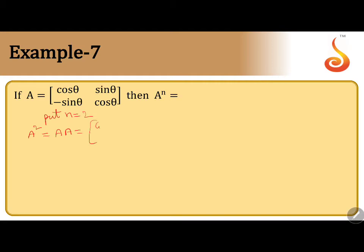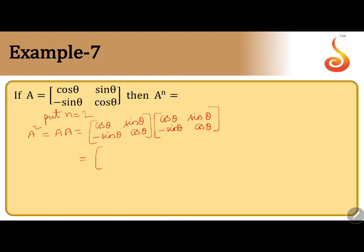So matrix A is already given as [cos θ, sin θ; -sin θ, cos θ] multiplied into again A = [cos θ, sin θ; -sin θ, cos θ]. So 2×2 matrix multiplied by 2×2 matrix gives a 2×2 matrix. We multiply from the first matrix rows and the second matrix columns.